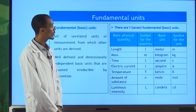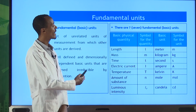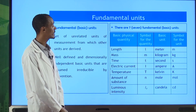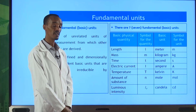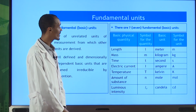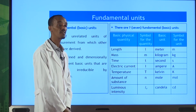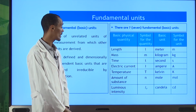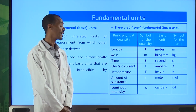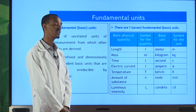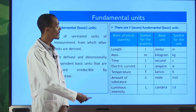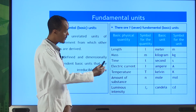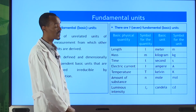The fundamental quantities and their units are: length is measured in meters, mass in kilograms, time in seconds, electric current in amperes, temperature in kelvin (the SI unit), amount of substance in moles, and luminous intensity in candela. The symbols for units are distinct from the symbols for quantities.